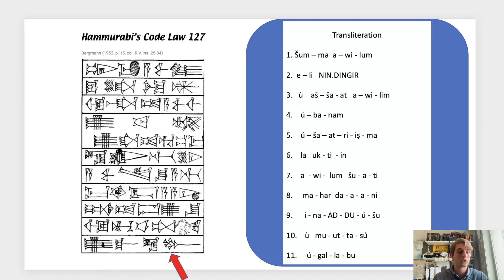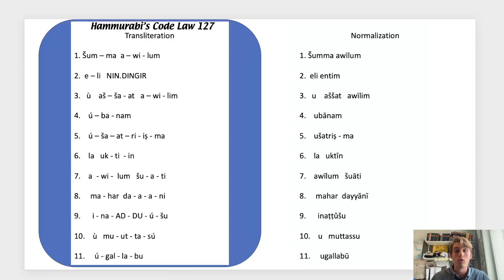Now we have our transliteration, which gives us all the syllables from our sign readings, and next we're going to form this into a normalization. Line one we have šumma awīlum; line two, eli ēntim — and as you can see, the Sumerograms Nin and Dingir combine to form one Akkadian word, ēntim.